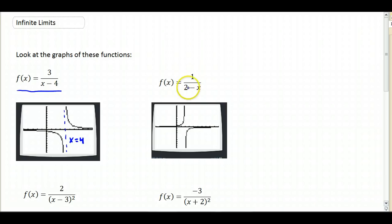Over here we have the graph of f of x equals 1 over 2 minus x, and here we have a vertical asymptote at x equals 2.